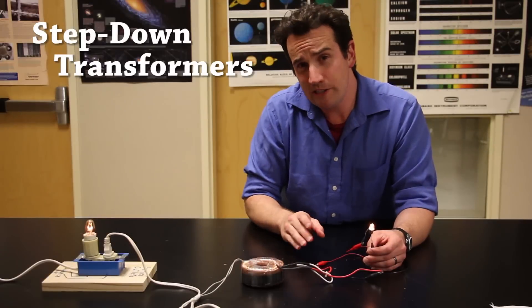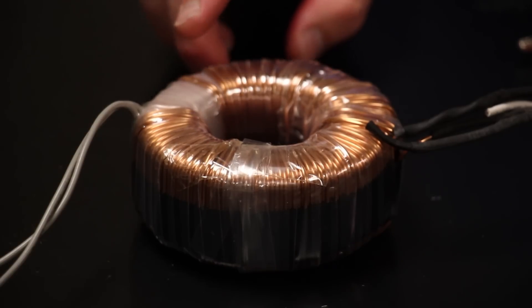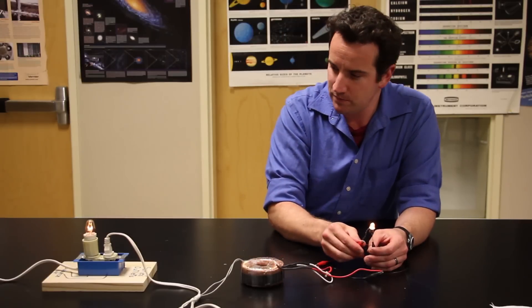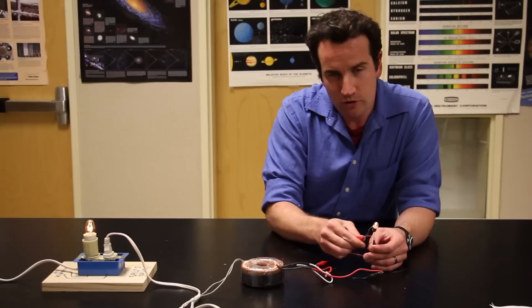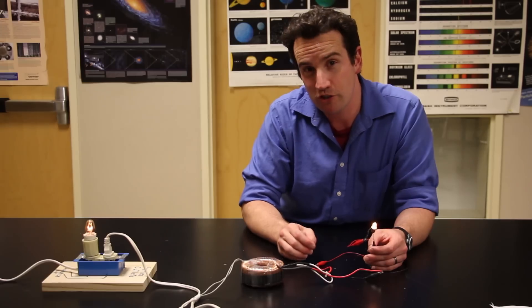If you have a high-quality step-down transformer like this 10 to 1 toroidal, then you can still do the demo, but you should work to ensure that your light bulbs have the same wattage. Toroidal transformers have excellent flux linkage, and so they tend to be more efficient.